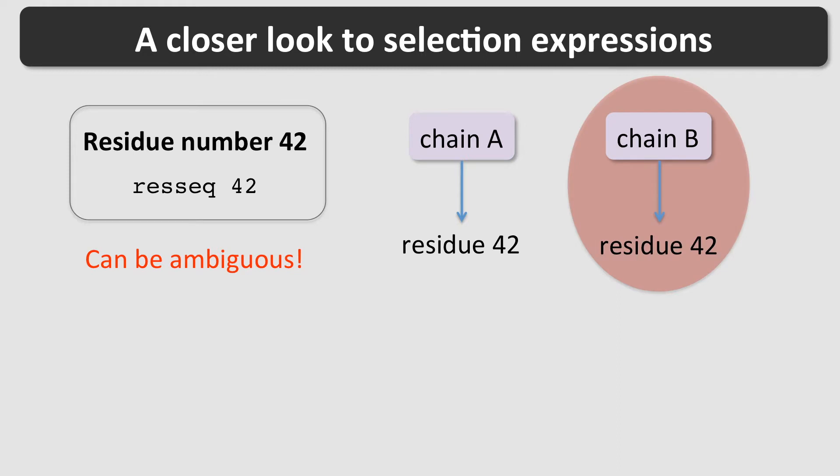The examples we looked at previously are quite intuitive, but let's have a closer look at one of the examples. To select the residue by its number, we used RSEC 42. This selection can be ambiguous. Imagine the case where there are several chains in the model, for example chain A and B. The selection RSEC 42 will select residue 42 from chain A and from chain B. If you want to select residue 42 from chain B only, both properties have to be combined.